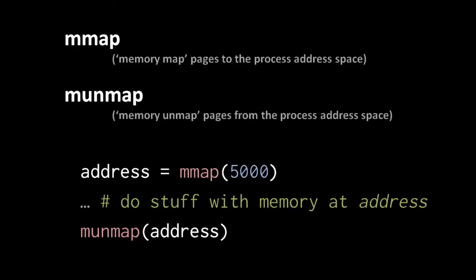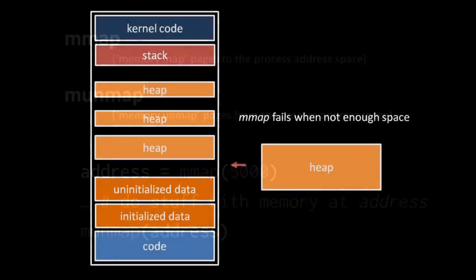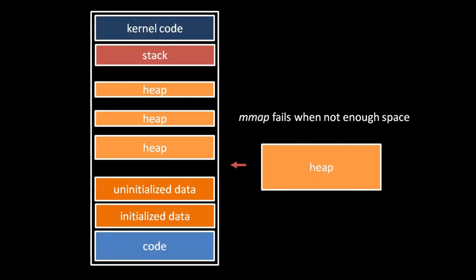Once you have an allocated chunk, you can read and write all the bytes in it. When you're done, you discard it by calling mmap with the address of the first byte of that chunk. Allocating and deallocating memory from a fixed address space is a tricky problem — you want to avoid a scenario where enough total bytes are available but they're not contiguous, causing an allocation to fail. This is one of the most studied problems in programming. Some programs, especially in C or C++, take allocation into their own hands: they allocate one big chunk at the start and use their own allocation algorithm to hand out sub-portions.